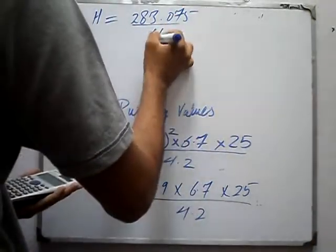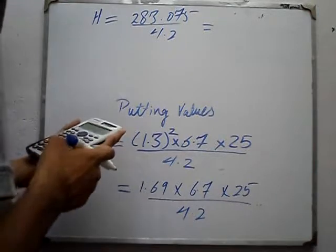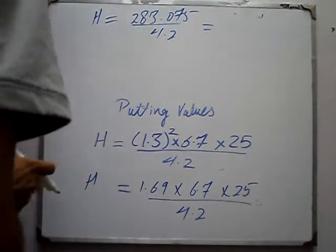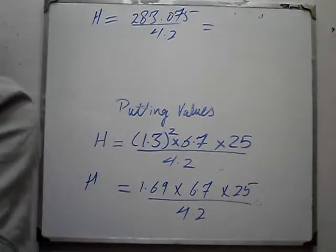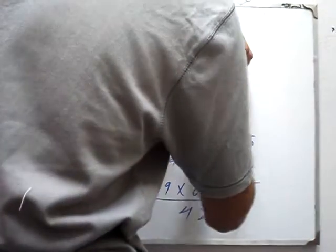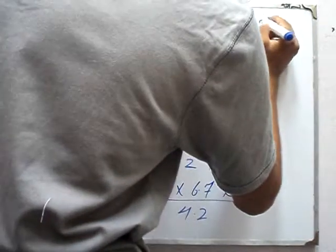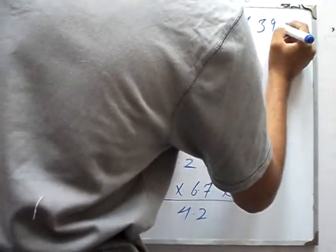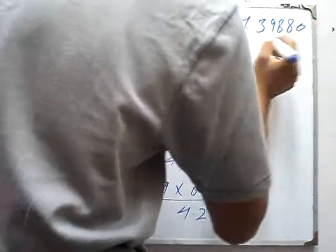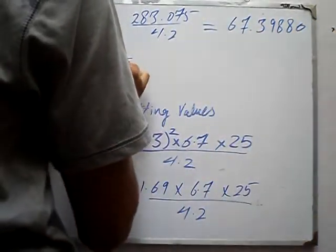And this is divided by 4.2. In the next step, this will be 67.39880. This will be the exact answer if you write the exact answer.